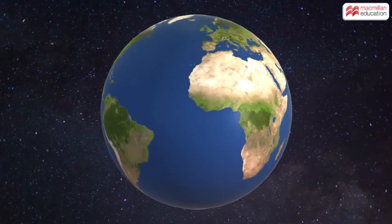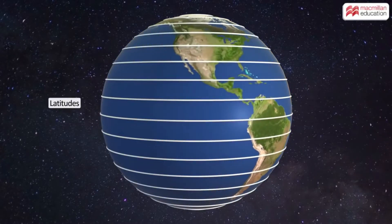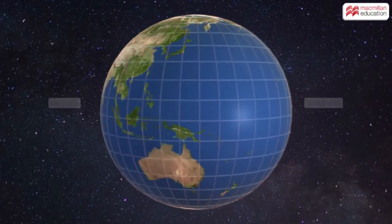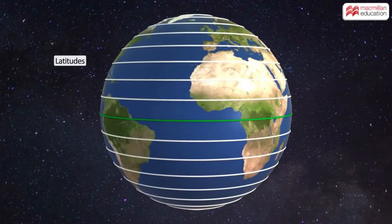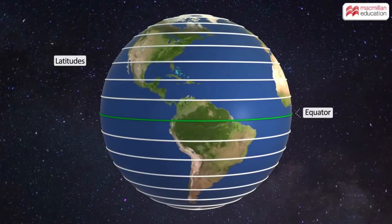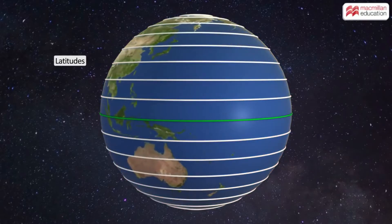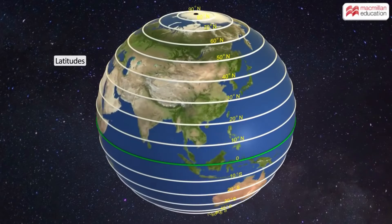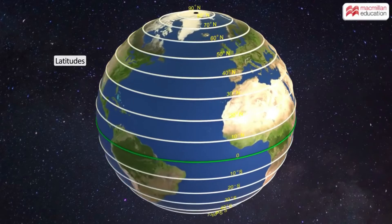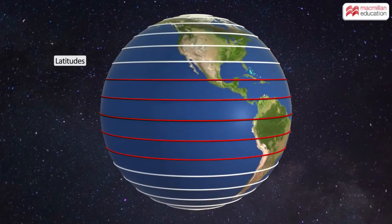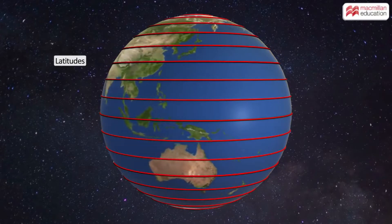The geographic coordinates of a place consist of the degrees of latitude and longitude. Latitudes or parallels are imaginary lines drawn parallel to the equator towards both the north and south directions. They are measured from 0 degrees to 90 degrees in both hemispheres.